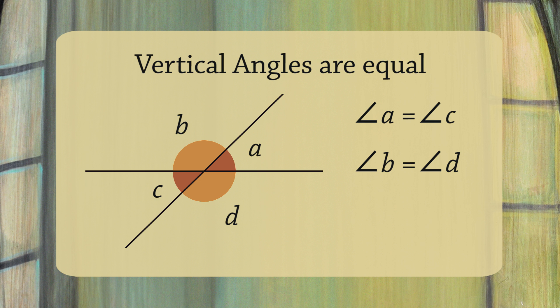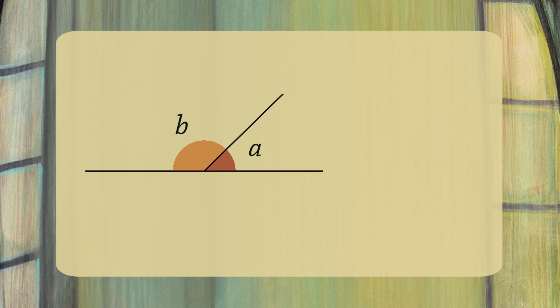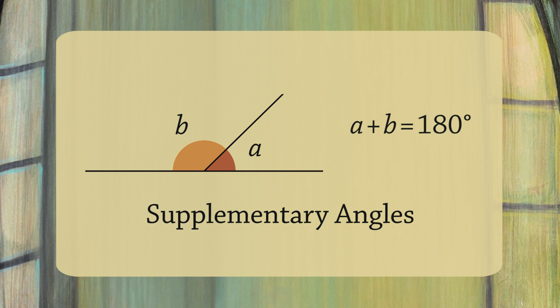Let's focus on the top half for a moment. These two angles form a straight angle, a 180-degree angle. This means that A plus B equals 180 degrees. Whenever two angles add up to 180 degrees, we call them supplementary angles.